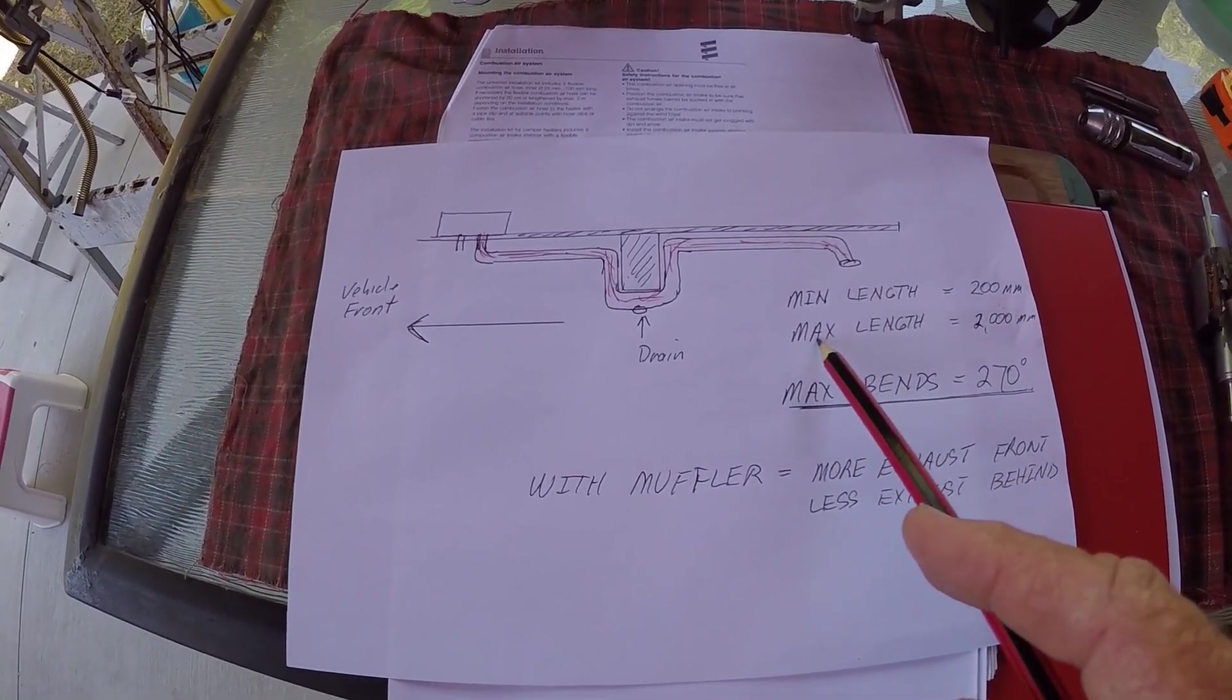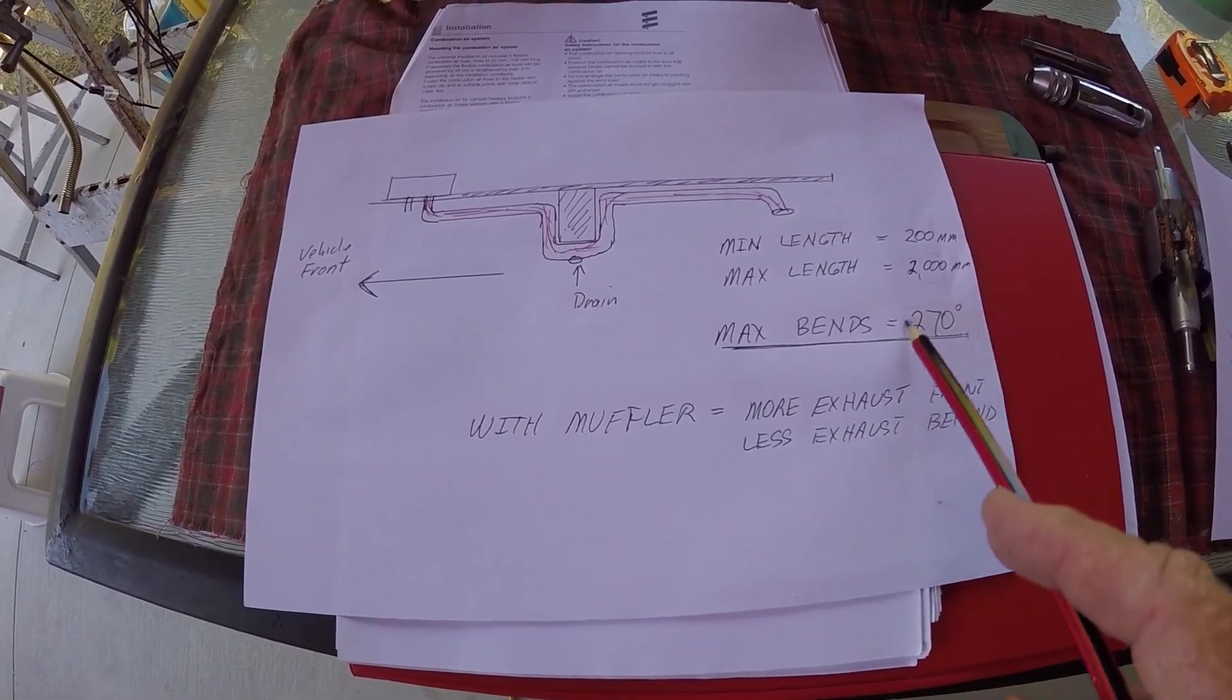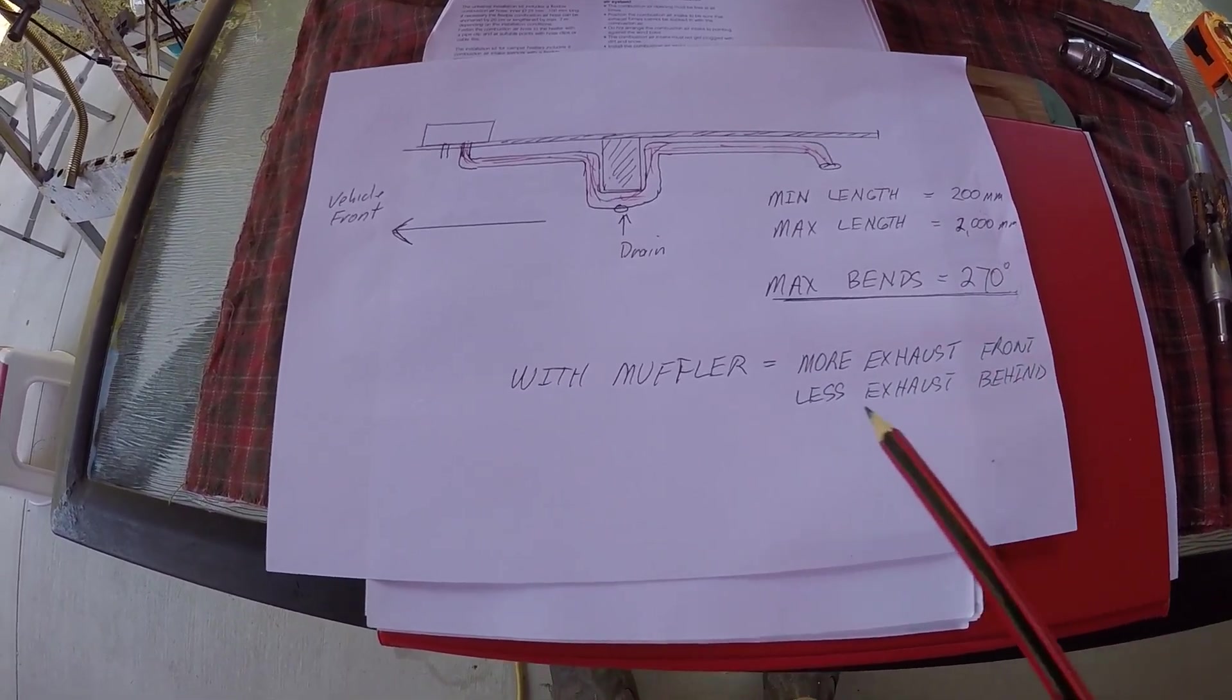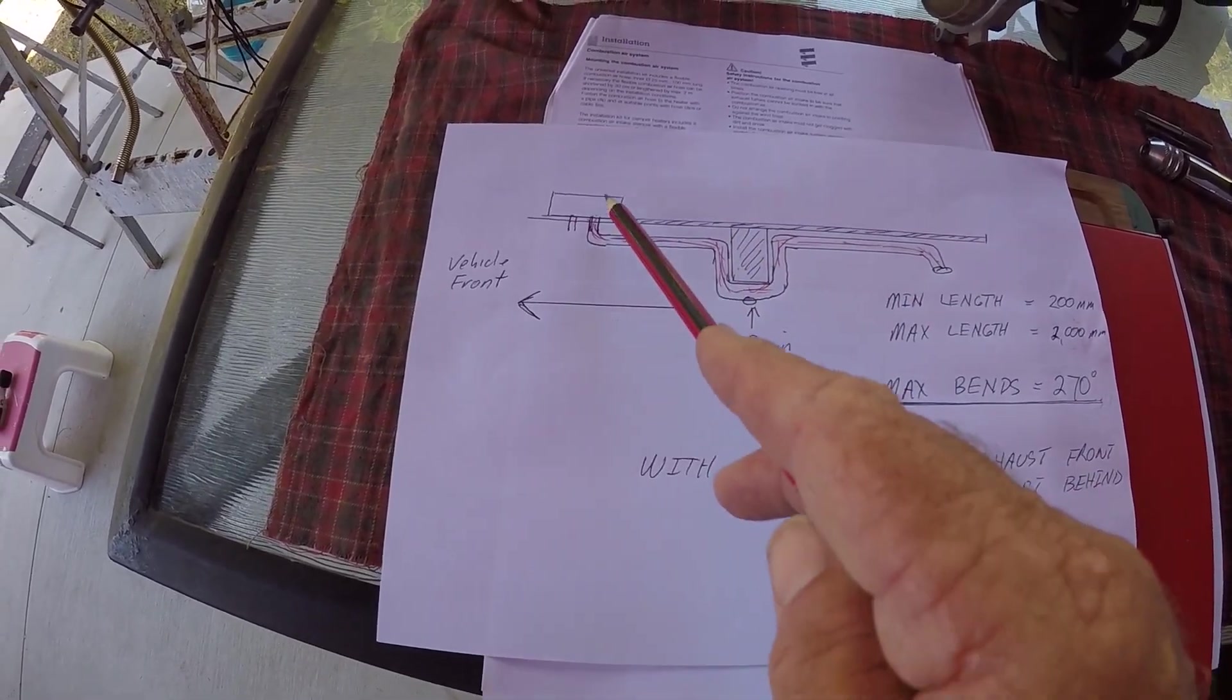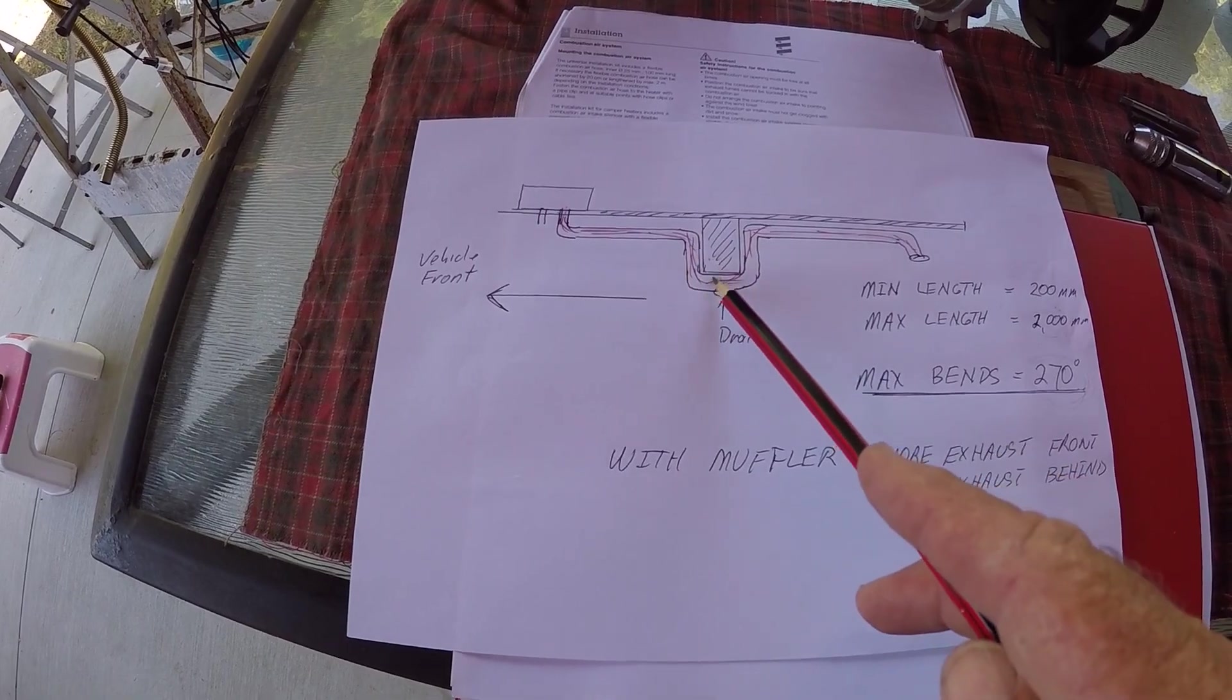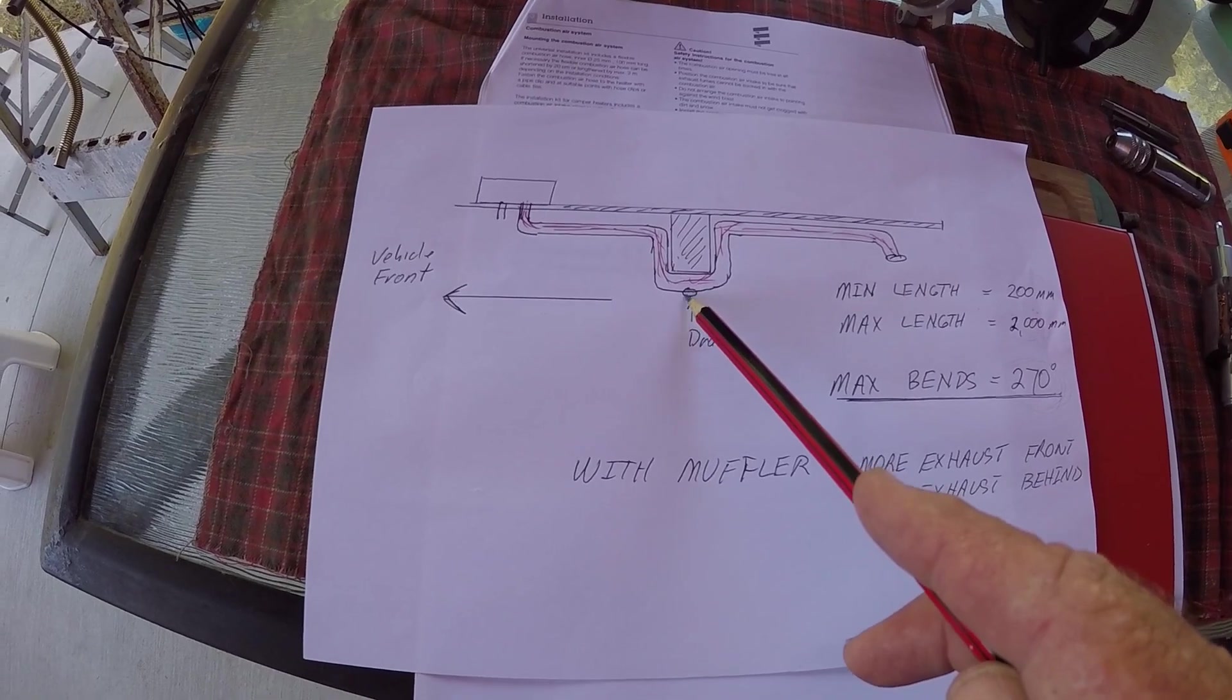So what we really need to look at here is that the minimum length of the exhaust needs to be 200 millimeters, the maximum of two meters, and you have a maximum bends of 270 degrees. So what you have to be careful of is say this is a motorhome and you're over a beam, so you're coming around here, being tidy going up and over the beam.